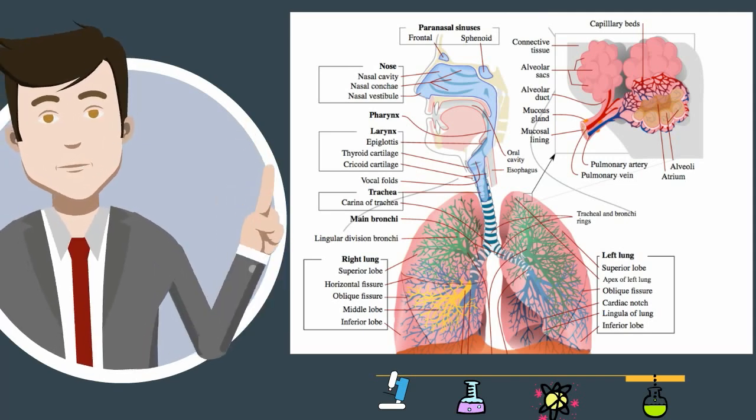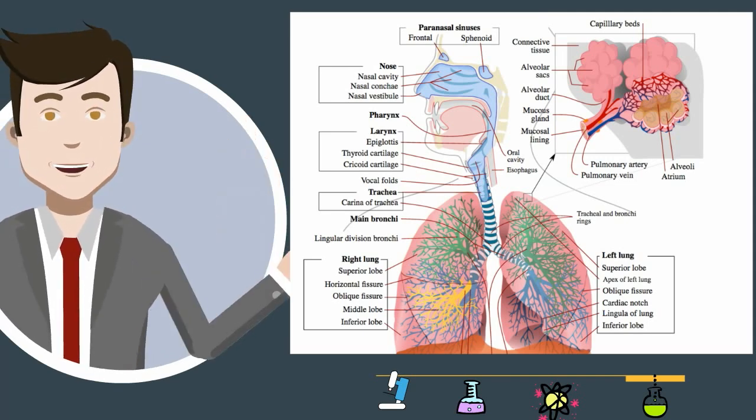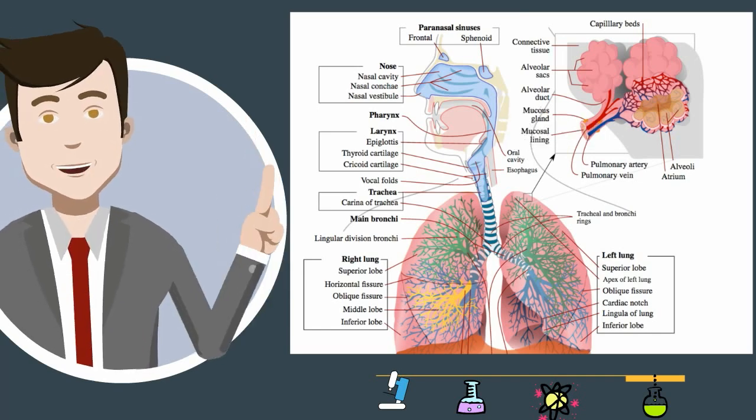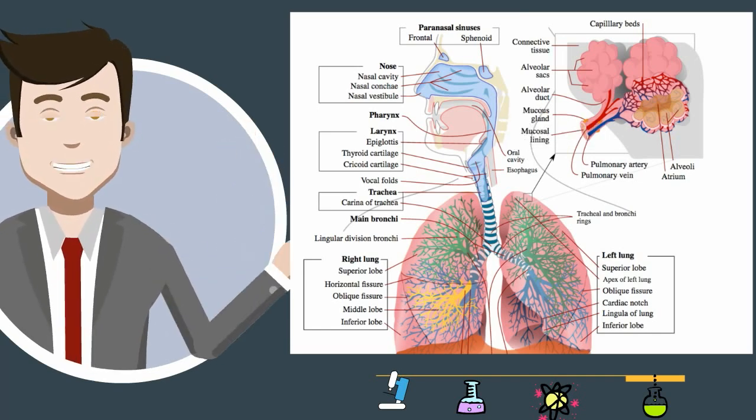From the pharynx air moves into the larynx which some people call the voice box and then it travels on to the trachea.